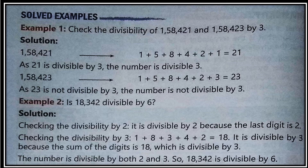Is 18,342 divisible by 6? First, check divisibility by 2 — the last digit is 2, so yes, it is divisible by 2. Now check divisibility by 3 by adding the digits: we get 18. Since 18 is divisible by 3, the number is divisible by both 2 and 3, so 18,342 is divisible by 6.